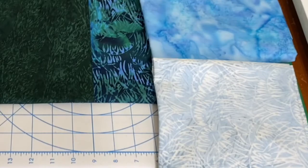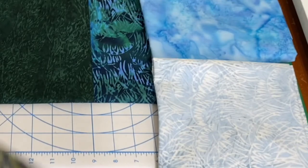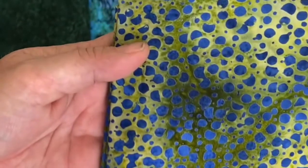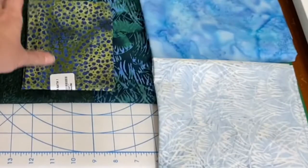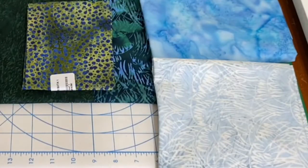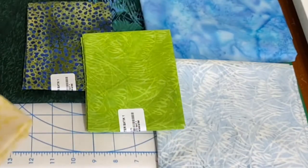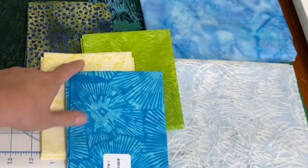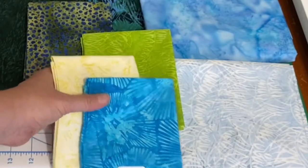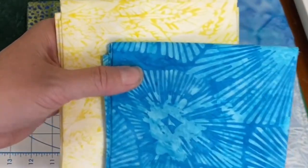And I have a lighter green print that I am going to pair with that. So that will be a fun accent. And then I needed another shade of green. So I like that bright pop. And then my center squares will be that blue and yellow combination.